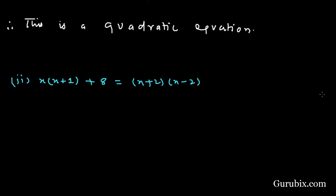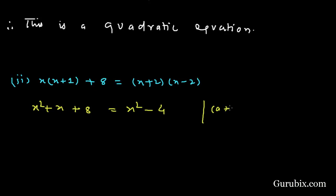In Part 2, we are given x(x + 1) + 8 = (x + 2)(x - 2). We shall multiply x with the values in the bracket to get x² + x + 8. On the right hand side, we apply the identity (a + b)(a - b) = a² - b², giving x² - 4.